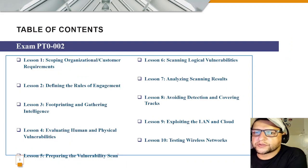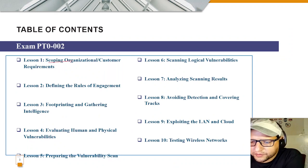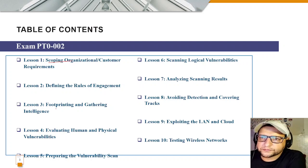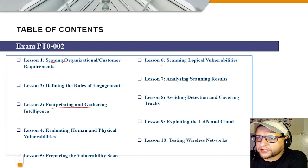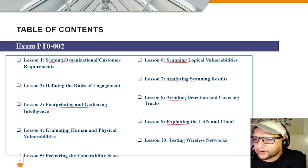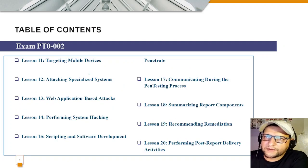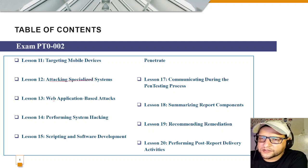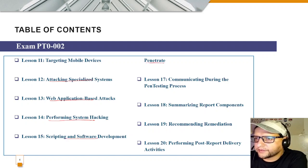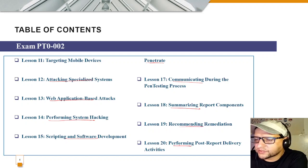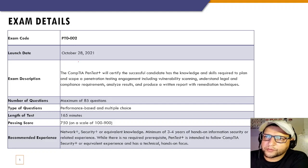The table of contents includes: Module 1 — scoping organizational requirements; Lesson 2 — rules of engagement; Lesson 3 — footprinting and intelligence; Lesson 4 — human and physical vulnerabilities; Lesson 5 — preparing vulnerability scans; Lesson 6 — scanning logical vulnerabilities; Lesson 7 — analyzing scan results; Lesson 8 — avoiding detection; Lessons 9 through 20 covering LAN/cloud exploitation, wireless, mobile, specialized systems, web attacks, system hacking, scripting, pivoting, communication, reporting, remediation, and post-delivery.